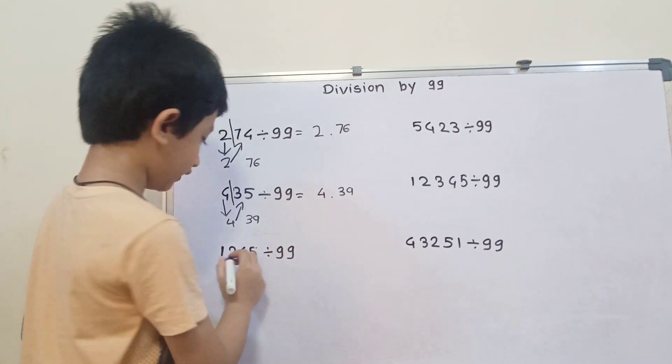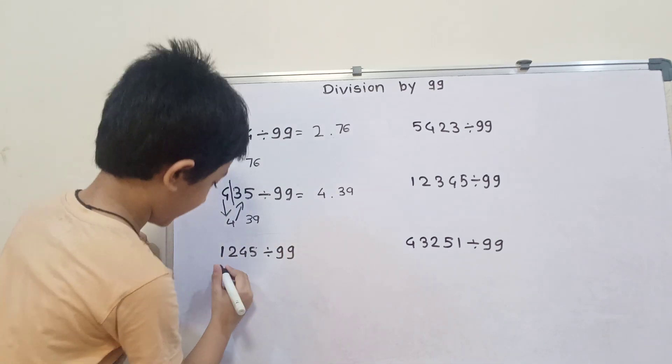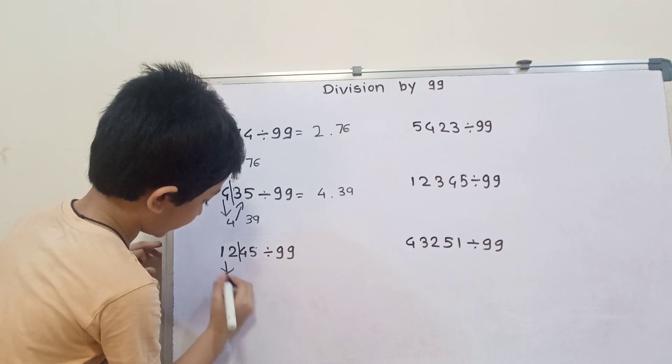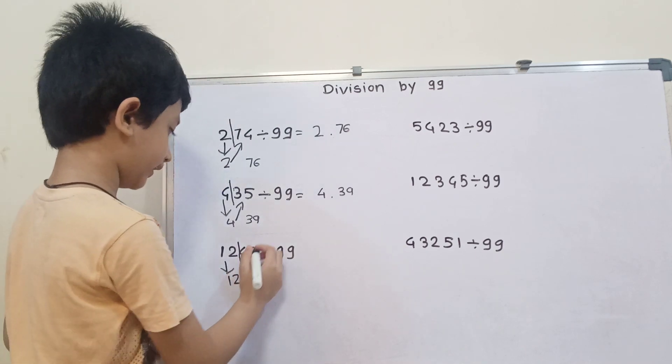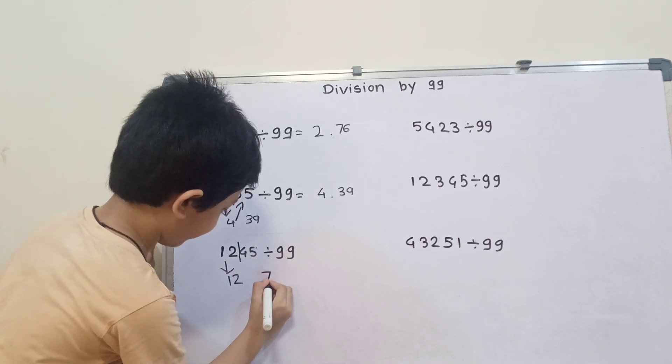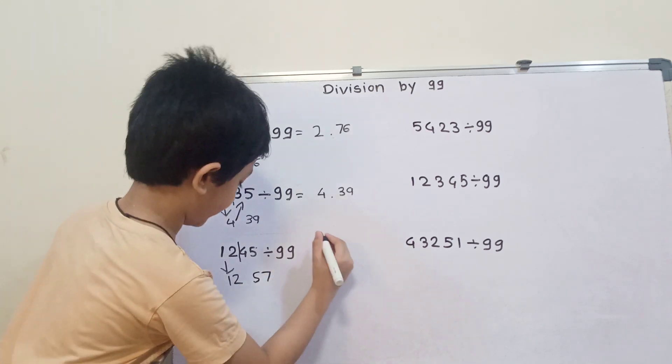Then 1245 divided by 99. We have 2 digits divided by 99. Write 12, then 45 plus 12. So 5 plus 2 is 7, and 4 plus 1 is 5. The answer is 12.57.